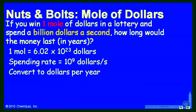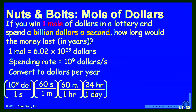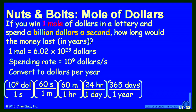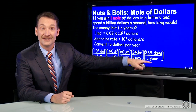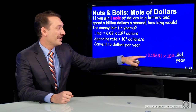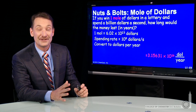Let's take our spending rate in dollars per second and change that into dollars per year. So I'll take $1 billion per second, multiply it by 60 seconds in a minute, and 60 minutes in an hour, and 24 hours in a day, and 365 days in a year. Notice how the seconds cancel, the minutes cancel, the hours cancel, and the days cancel — so what I have left is dollars per year: 3.15 times 10 to the 16th dollars per year.